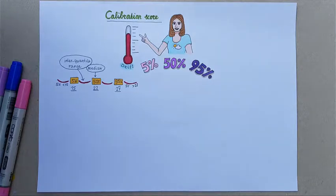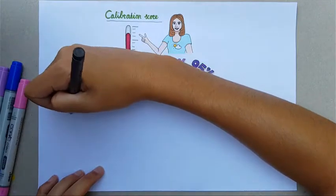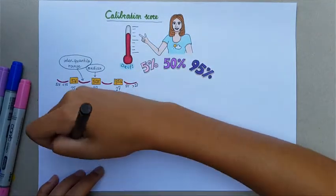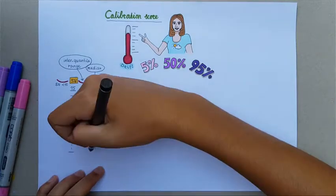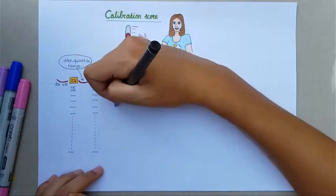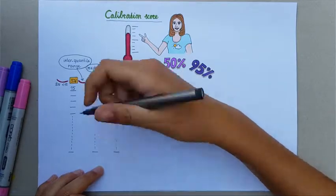So the true value would lie within one of these four inter-quantile ranges. Imagine we ask our expert not one, but 100 questions, and for each question she provides three quantiles which determine the four inter-quantile ranges.